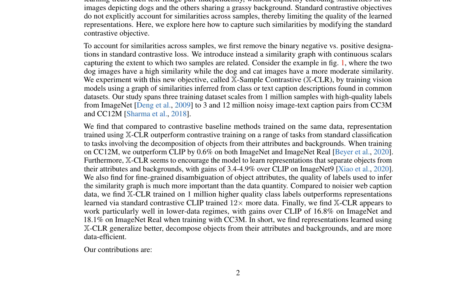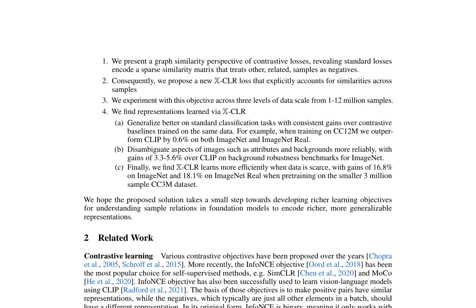XCLR achieves gains of 0.6% over CLIP on ImageNet and ImageNet Real when training on CC12M, and 3.4–4.9% on ImageNet 9. The quality of labels used to infer the similarity graph is more important than data quantity, and XCLR appears to work particularly well in lower data regimes, with gains of 16.8% on ImageNet and 18.1% on ImageNet Real when training with CC3M. XCLR enables the model to learn representations that generalize better, decompose objects from their attributes and backgrounds, and are more data-efficient.